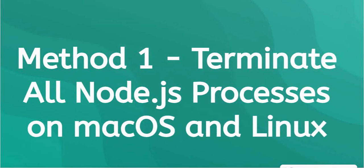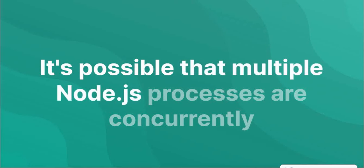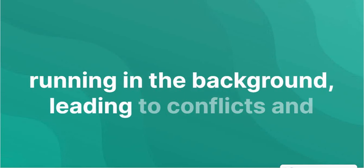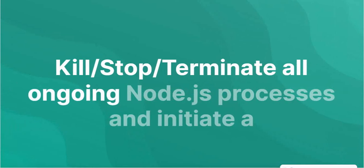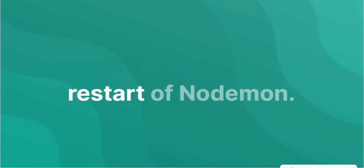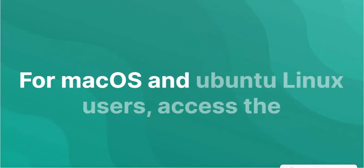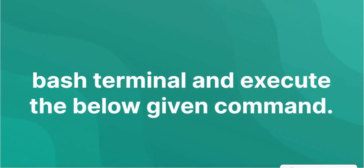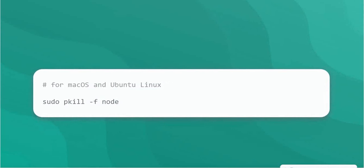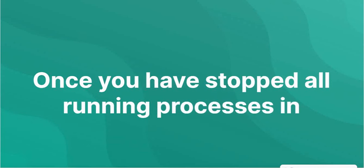To terminate all Node.js processes on macOS and Linux: remember that multiple Node.js processes may be concurrently running in the background, leading to conflicts and the emergence of the error. Stop and terminate all ongoing Node.js processes and initiate a restart of Nodemon. For macOS and Ubuntu Linux users, access the bash terminal and execute the command to stop all running Node.js processes.